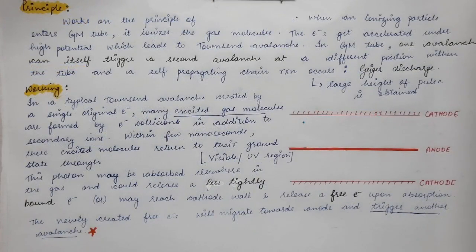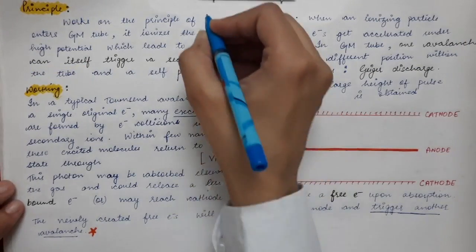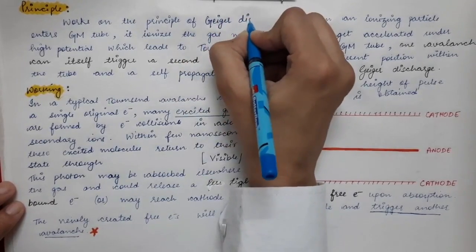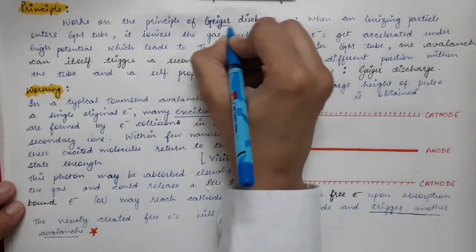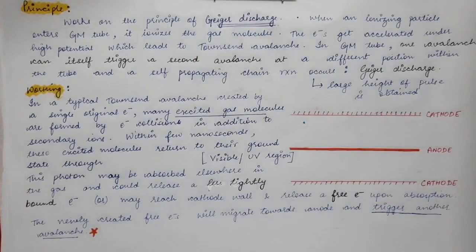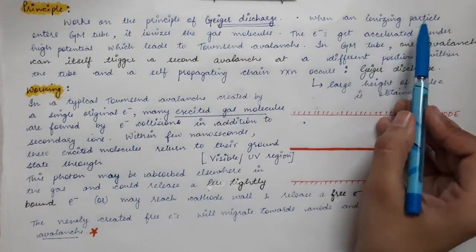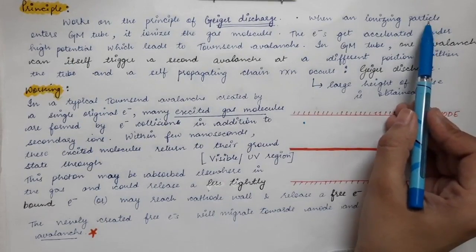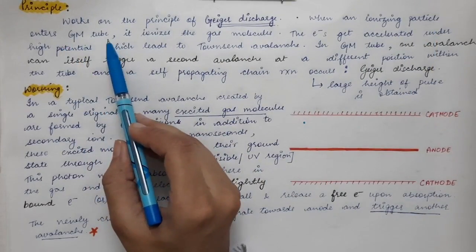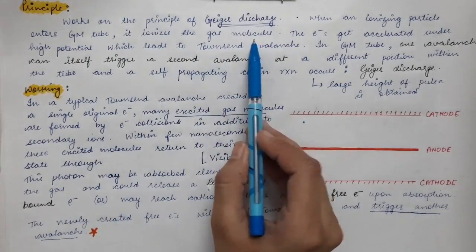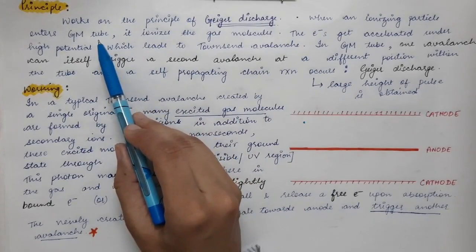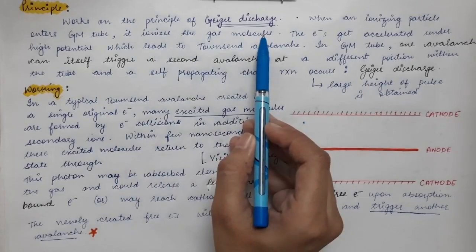The GM counter works on the principle of Geiger discharge. When an ionizing particle — such as an alpha or beta particle — enters the GM tube, it ionizes the gas molecules present inside. During this ionization, electrons and positive ions are produced.